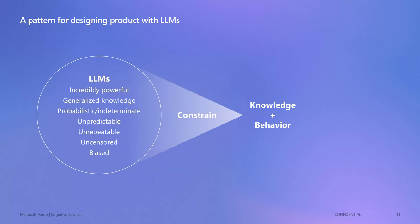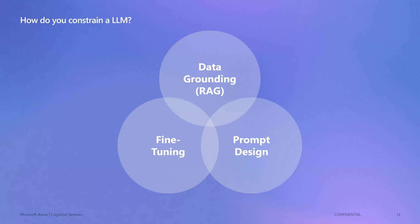As designers of applications with AI, we're trying to figure out tools and services that constrain the power of these LLMs — constraining what they know and how they act — so they can be more targeted, more predictable, more repeatable, reliable, and safe. There are three big concepts for constraining a model: fine-tuning, designing the prompts, and grounding it to a specific dataset.